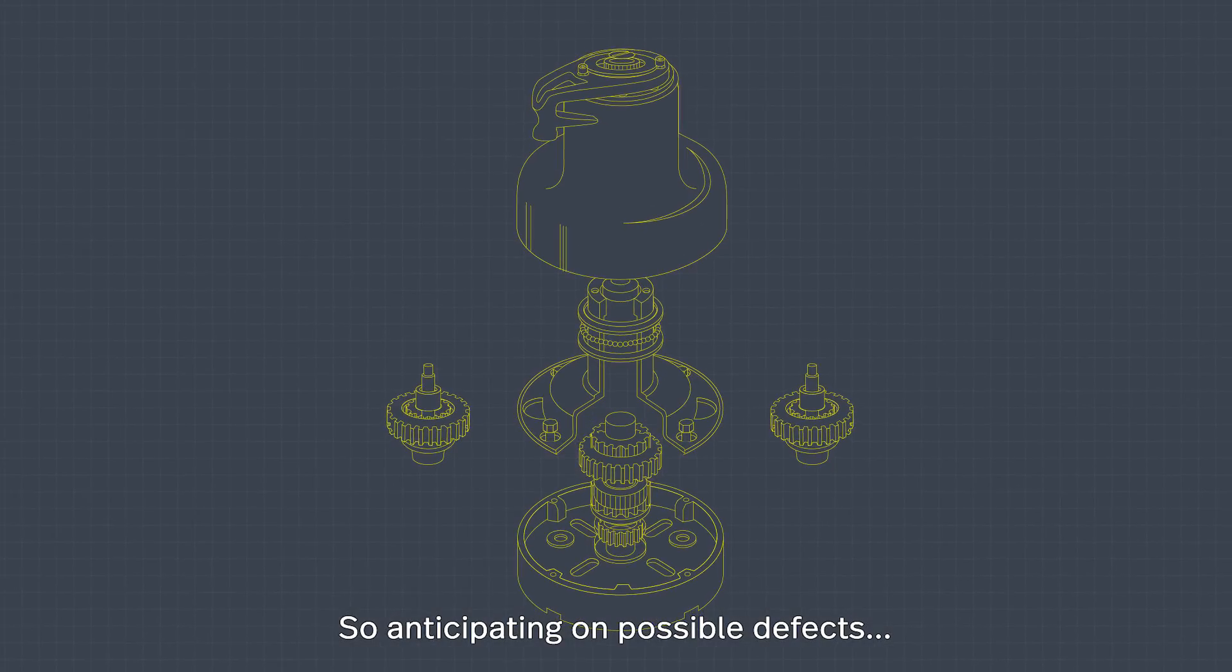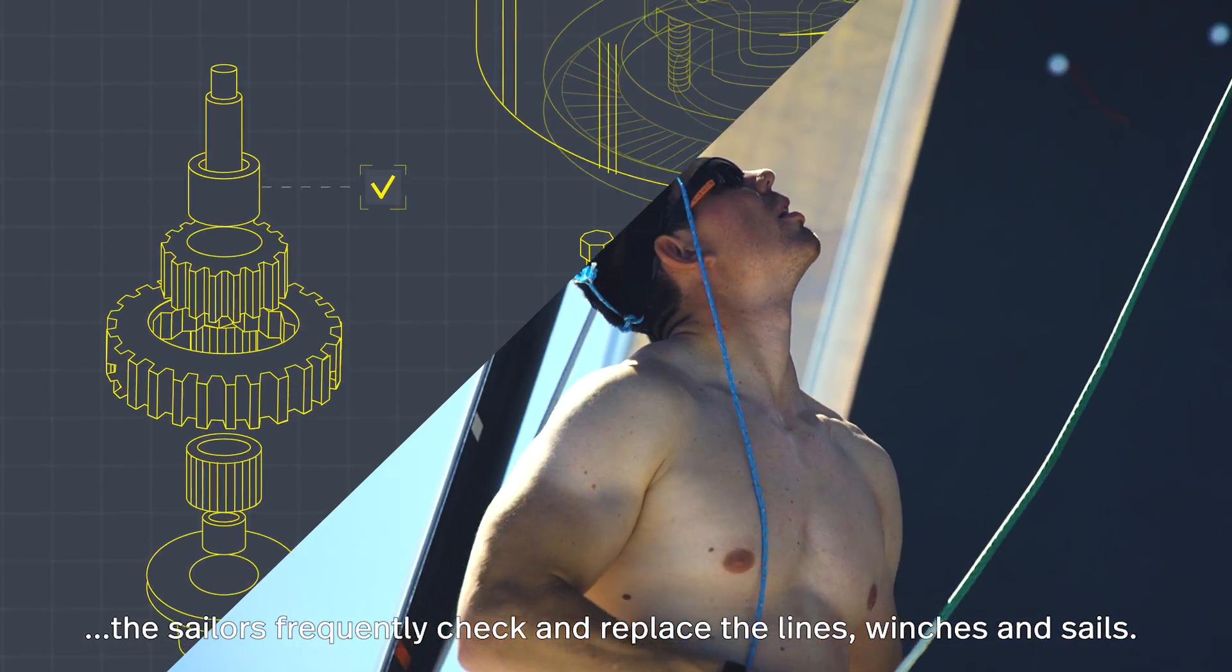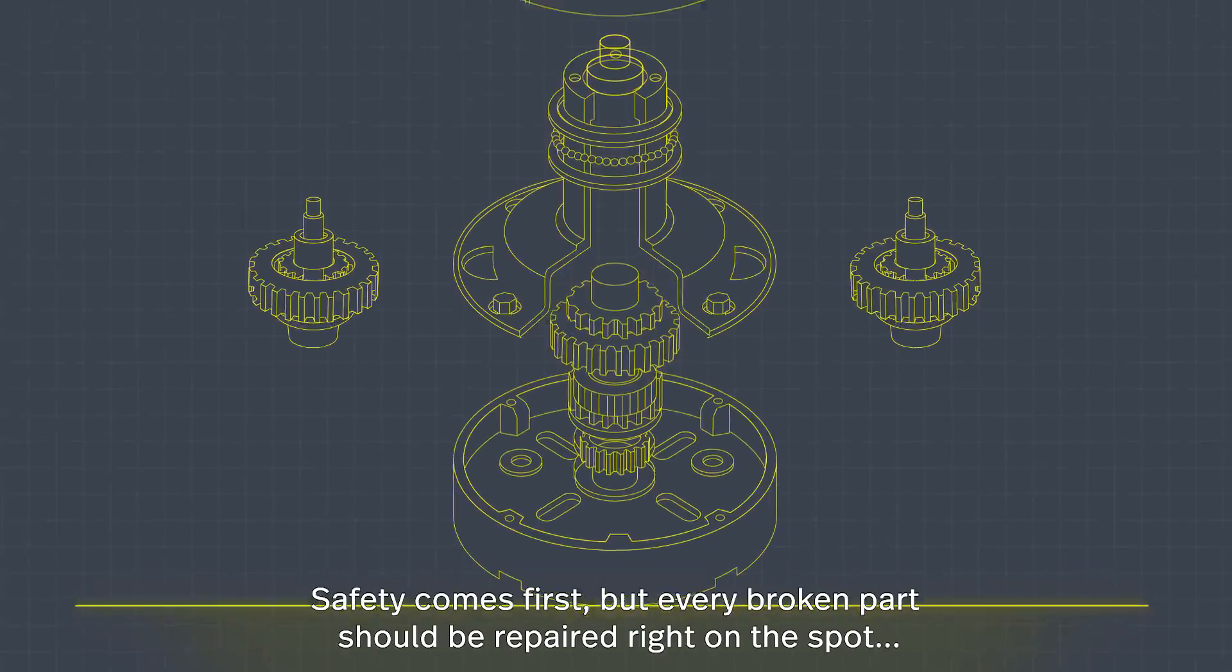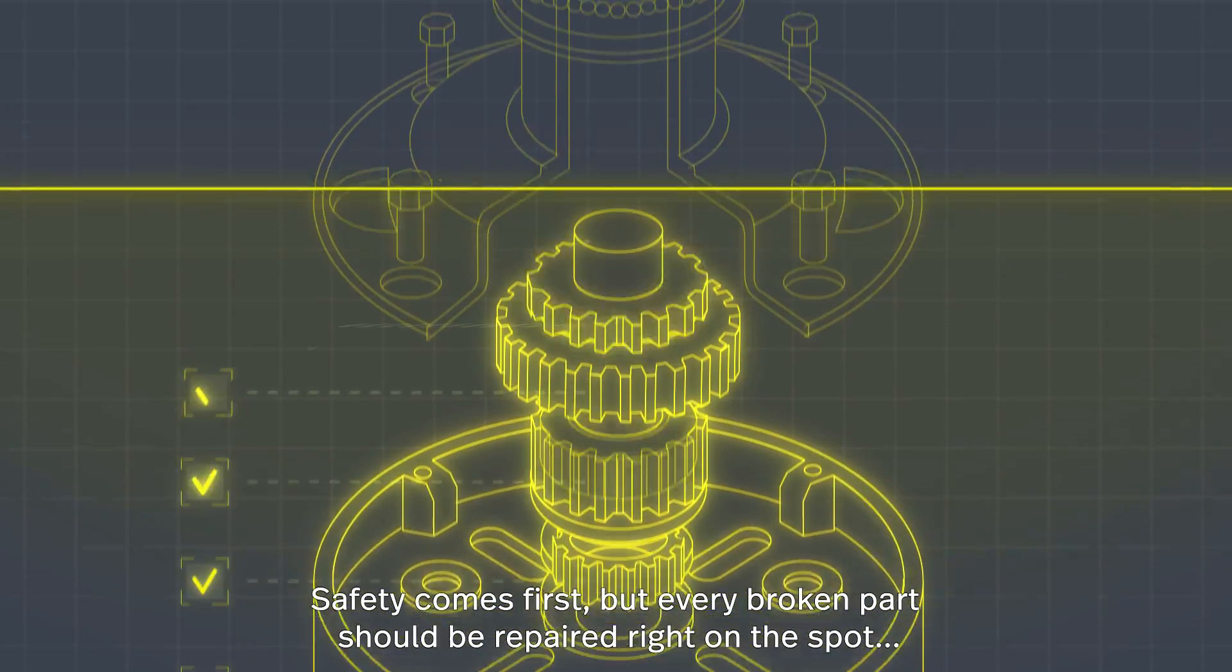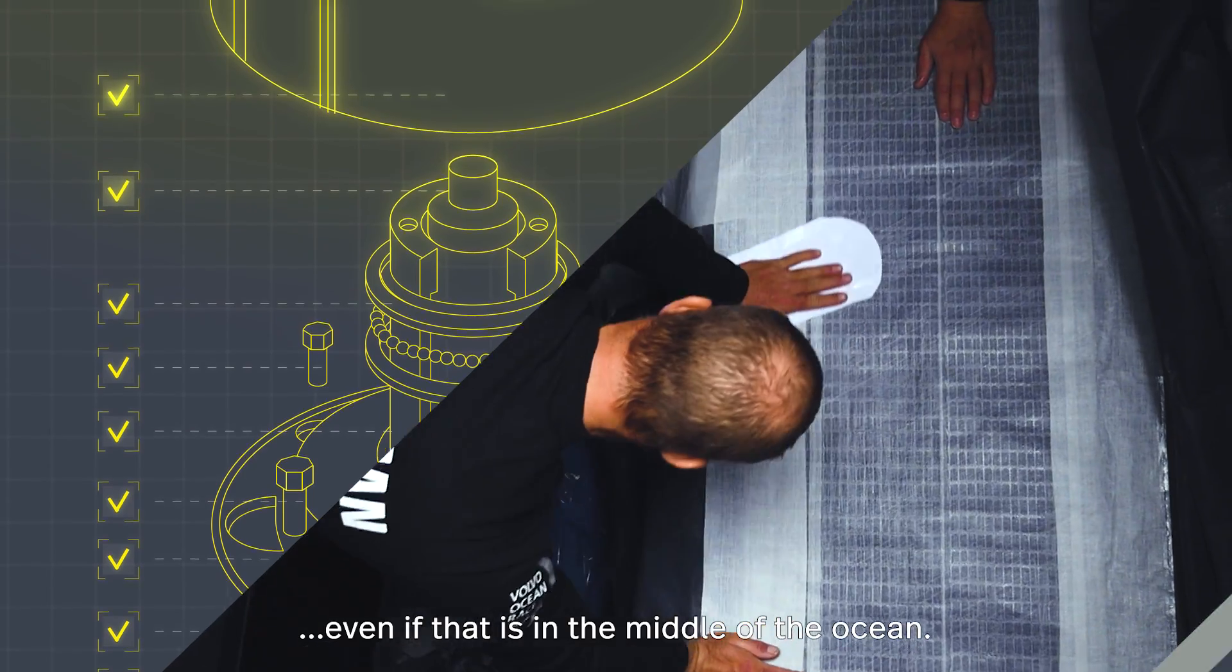So, anticipating possible defects, the sailors frequently check and replace the lines, winches and sails, even when that means climbing up the 30 metre high mast. Safety comes first, but every broken part should be repaired right on the spot, even if that is in the middle of the ocean.